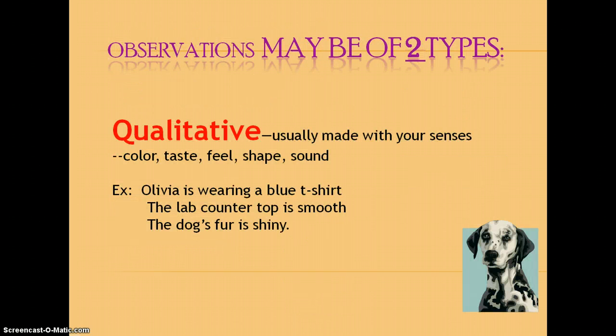Now, your observations can be of two types. You can have qualitative, which is usually made with your senses. Think of quality. So your qualitative observations: color, taste, feel, shape, sound. And the example I have here is Olivia is wearing a blue t-shirt, or the lab countertop is smooth, or the dog's fur is shiny. Those are all qualitative observations.